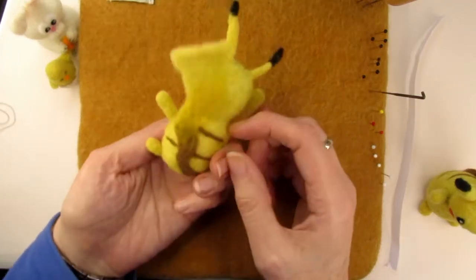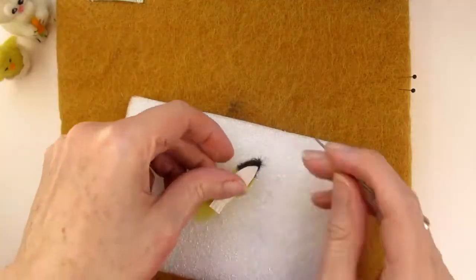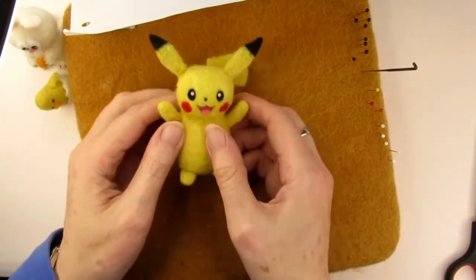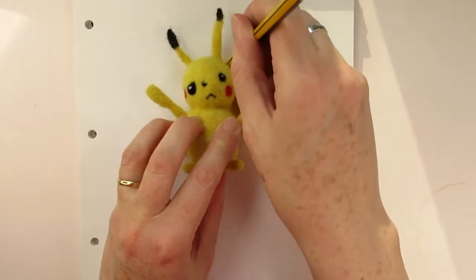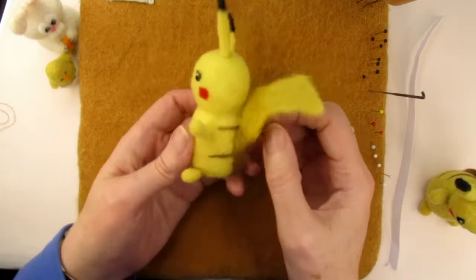Do you struggle to get your needle felted arms, legs and ears the same size and shape as each other? Well I've got five tips on needle felting symmetrically to help you get everything looking great every time like this Pikachu. Later in the video I'll show you how you can check if your felted item is symmetrical and fix all of this little guy's problems.